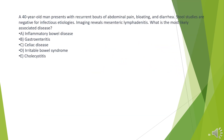A 40-year-old man presents with recurrent bouts of abdominal pain, bloating, and diarrhea. Stool studies are negative for infectious etiologies. Imaging reveals mesenteric lymphadenitis. What is the most likely associated disease?